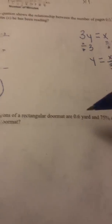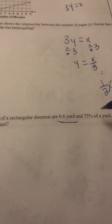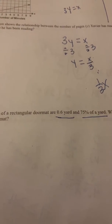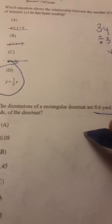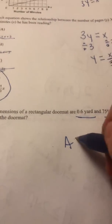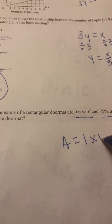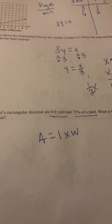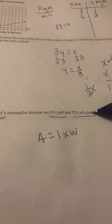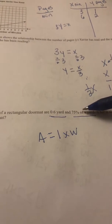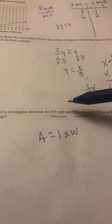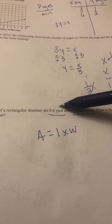Well, here we have six-tenths of a yard and 75% of a yard. First of all, your formula for area of a rectangle is equal to length times width. Okay, so what we need to do, we have 75% of a yard. We need to change that so that is a decimal like this one.